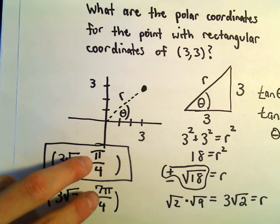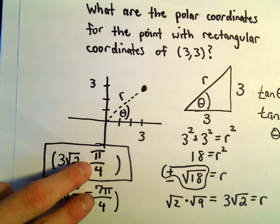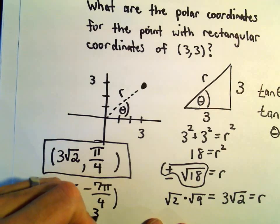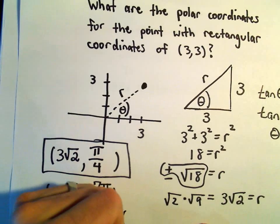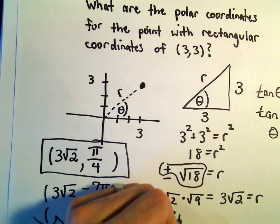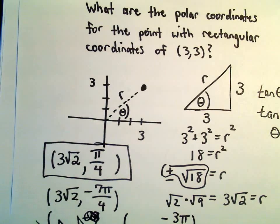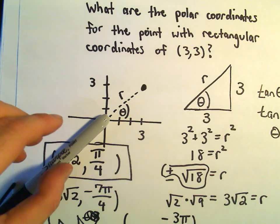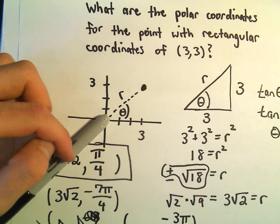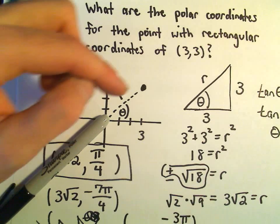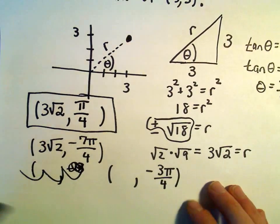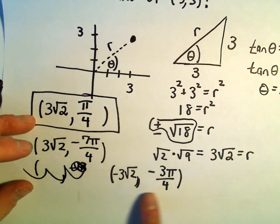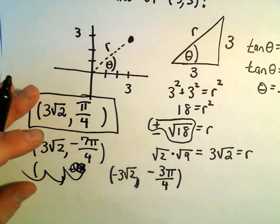So you can always add or subtract multiples of 2 pi from your value, your angle. We could have even used, say, a different one. Suppose we use the angle negative, how about the angle, let's see, negative 3 pi over 4. So normally, positive 3 pi over 4 would put us, you know, up in the second quadrant. Negative 3 pi over 4 would put us down in the third quadrant. If we use a positive radius, though, it would keep us in the third quadrant. Well, to reflect things back, we would just take the negative of that. So we could use negative 3 root 2, comma, negative 3 pi over 4 as another way to describe that point using polar coordinates.